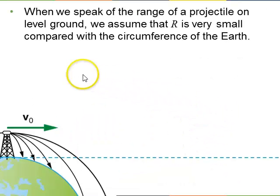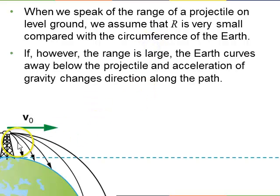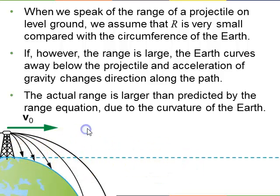So, keep in mind, when we did this, when we derived this equation for range, we assumed that the earth is flat and the ground is flat and the earth is not curved. So, when we speak of the range of a projectile on level ground, we assume that the range, R, is very small compared with the circumference of the earth. But in reality, if the range is very large, the earth would curve away from the projectile and actually the acceleration of gravity would change direction to be towards the center of the earth. So, if this dashed line is maybe what we assume is being flat, the actual range would be larger than predicted by the range equation due to this curvature of the earth.